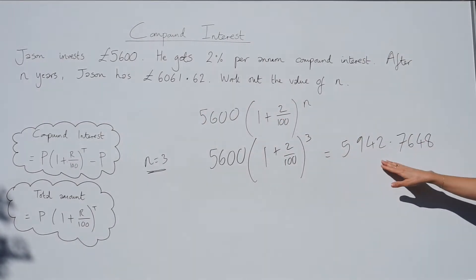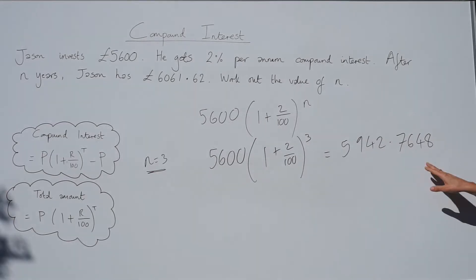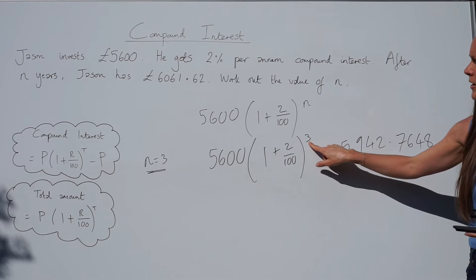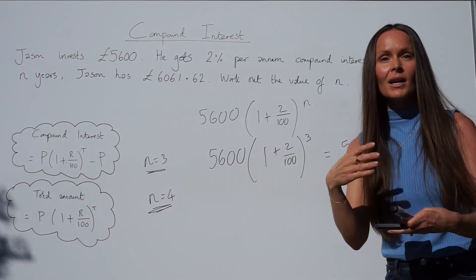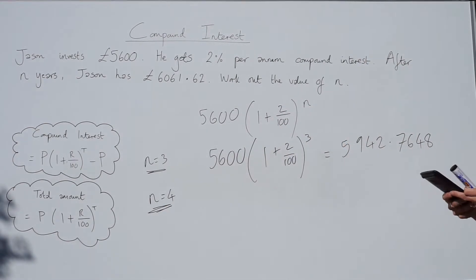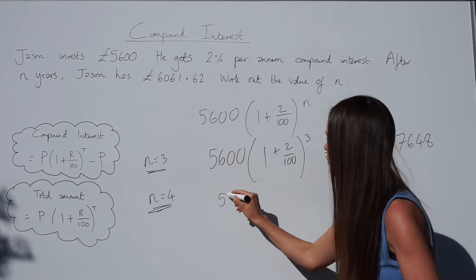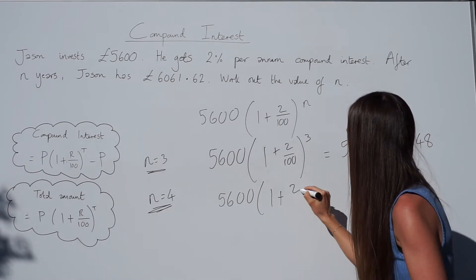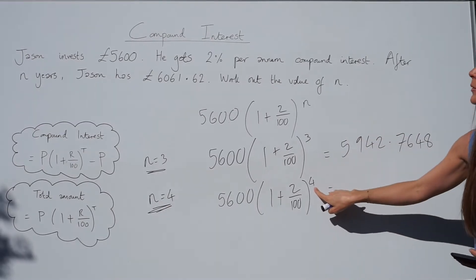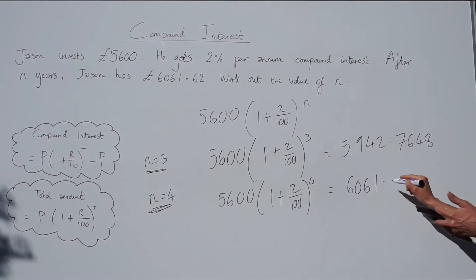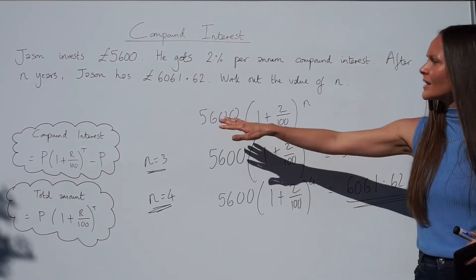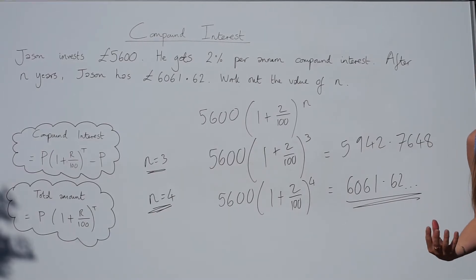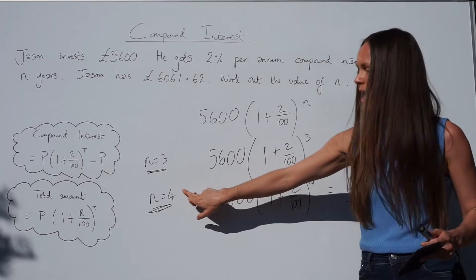That number is too small — Jason had £6,061.62 after his investment, not £5,942.76. Because the result is too small we need to increase the number of years, so let's try n equals 4. Putting 5600 × (1 + 2/100)⁴ into the calculator gives exactly 6061.62 — the same total amount given in the question. So Jason invested his money for four years, and n equals 4.